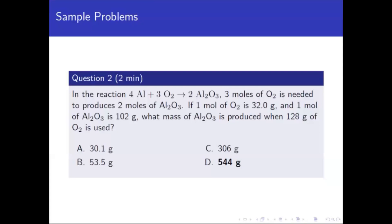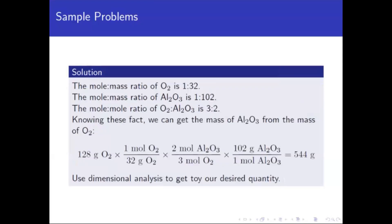We have the mole ratio needed to convert from moles of oxygen to moles of Al2O3. We are also given the mole-to-mass ratios: 1 mole of oxygen is 32 grams, and 1 mole of Al2O3 is 102 grams. The mole-to-mole ratio of oxygen to Al2O3 is 3 to 2.